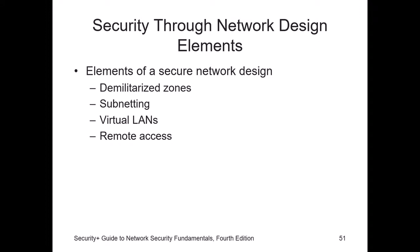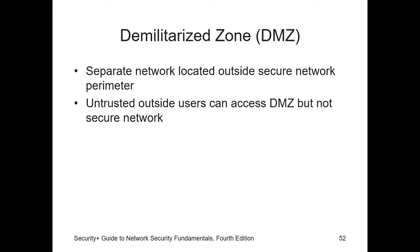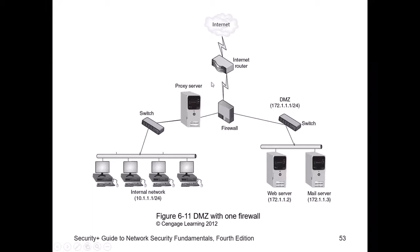The DMZ — demilitarized zone — is where you place servers that need to be accessed from the outside, such as web servers. You don't want these inside your internal network because if there's an attack, the attackers gain access to the whole network. Instead, place public-access devices on the boundary — outside your LAN but still protected by a separate firewall. This way, if anything goes wrong, the damage is contained in the DMZ and doesn't reach your internal LAN.